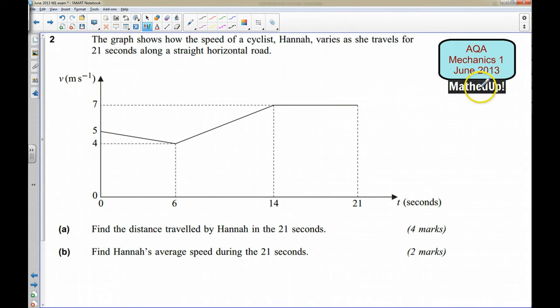Hi, this is question 2 of the AQA Mechanics 1 June 2013 exam paper. For this question we're given the graph of how the speed of a cyclist Hannah varies as she travels for 21 seconds along a straight horizontal road.